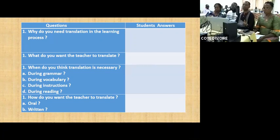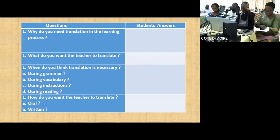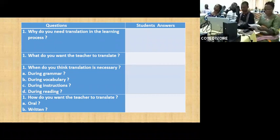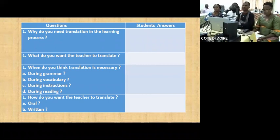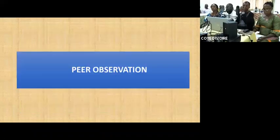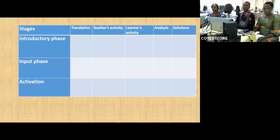For the first question — why do students need translation in the learning process — students said translation is easy and it facilitates comprehension. What do they want the teacher to translate? They want the teacher to translate difficult words in the text, instructions, and grammar points. When do they think translation is necessary? During grammar, vocabulary, and instruction-setting. And how do they want the teacher to translate? They prefer both orally and in a written way.